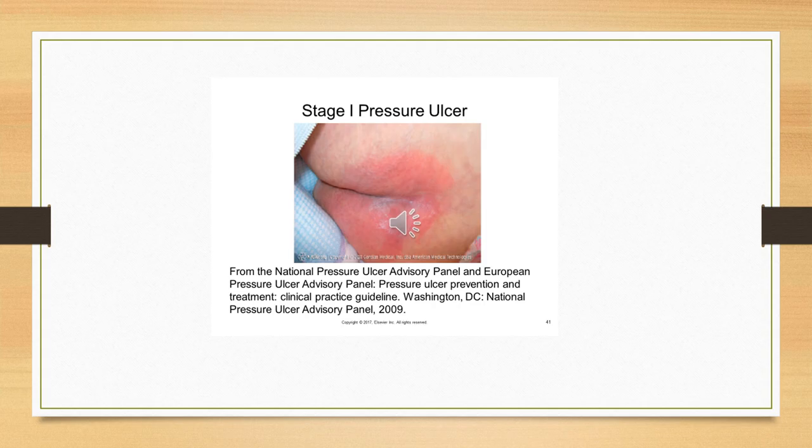A stage one pressure ulcer shows intact, non-blanchable red skin. When measuring wounds, you document length times width times depth in centimeters, always at the longest point. A stage one has no depth since it is not open. Facilities typically measure weekly to track meaningful changes in size.